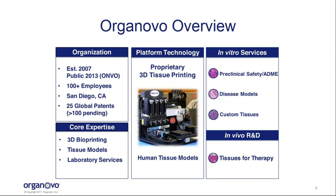For the work we're going to talk about today, the way our customers and partners access these disease models — and also some of the work we do in preclinical safety or ADME — is through a services model. Customers send us their test articles, we create and treat the tissues, and do a lot of analysis in-house. We also work with partners on custom tissue development, creating new versions or completely new tissues. And finally, we have a very exciting area of work developing in vitro tissue models for therapeutic purposes — ultimately to put them into patients.